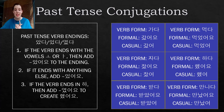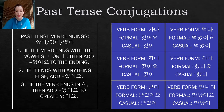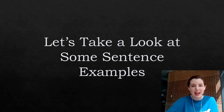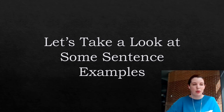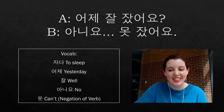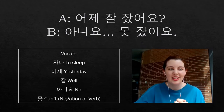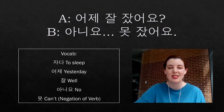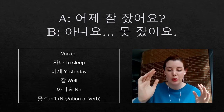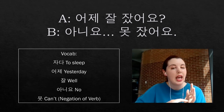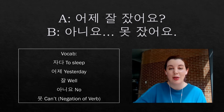Please review those slides if you need more clarification on any of the past or present tense verb conjugations. Now we're going to look at some sentence examples to get it more solidified. Here are the sentence examples. This first one is for 자다, which means to sleep. I did most of these in a conversation format, so you'll see person A and person B. Person A says: 어제 잘 잤어요?